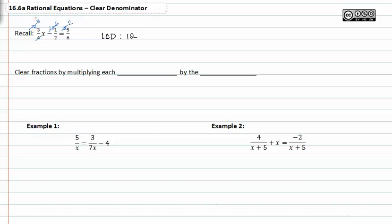These numbers up here are what we multiply to the numerator of our fraction, and notice that the denominators all divide out. From here we get nine x minus six equals ten.